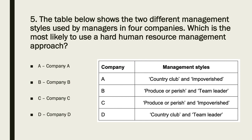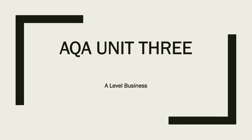This question is about thinking through management styles related to the Blake Mouton grid. If it's hard HRM, you're treating your employees as a resource, meaning there's less concern for people. So we're looking for management styles with least concern for people. It can't be team leader and it can't be country club — both show concern for people — so the only possible answer is C.